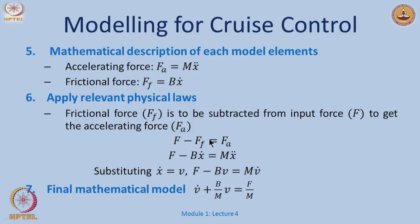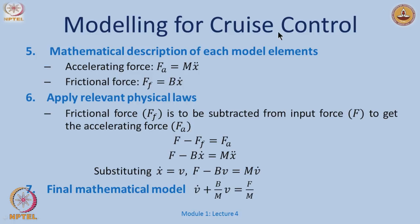The external force, frictional force, and accelerating force sum to zero. The frictional force is B times x-dot, and the accelerating force is m times x double dot. Substituting that dx/dt is velocity v, we write the equation as: f minus B times v minus m times v-dot equals zero, or equivalently v-dot plus (B/m) times v equals f/m. This is a very simple model that captures cruise control in a car — simplified but giving basic understanding of the system dynamics.